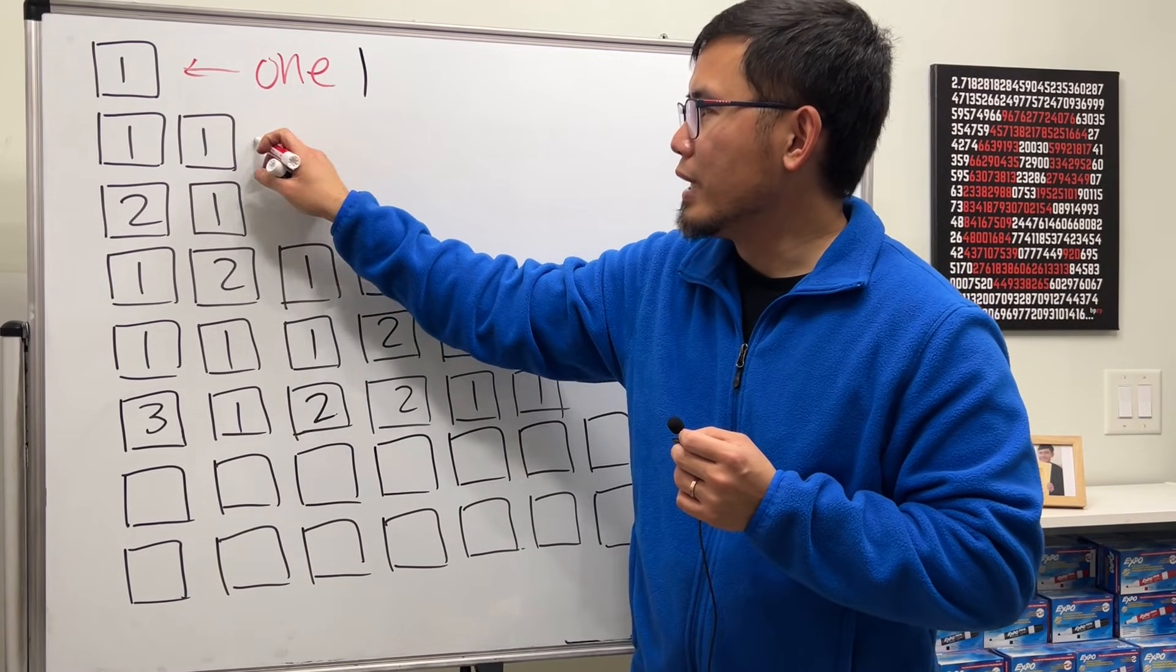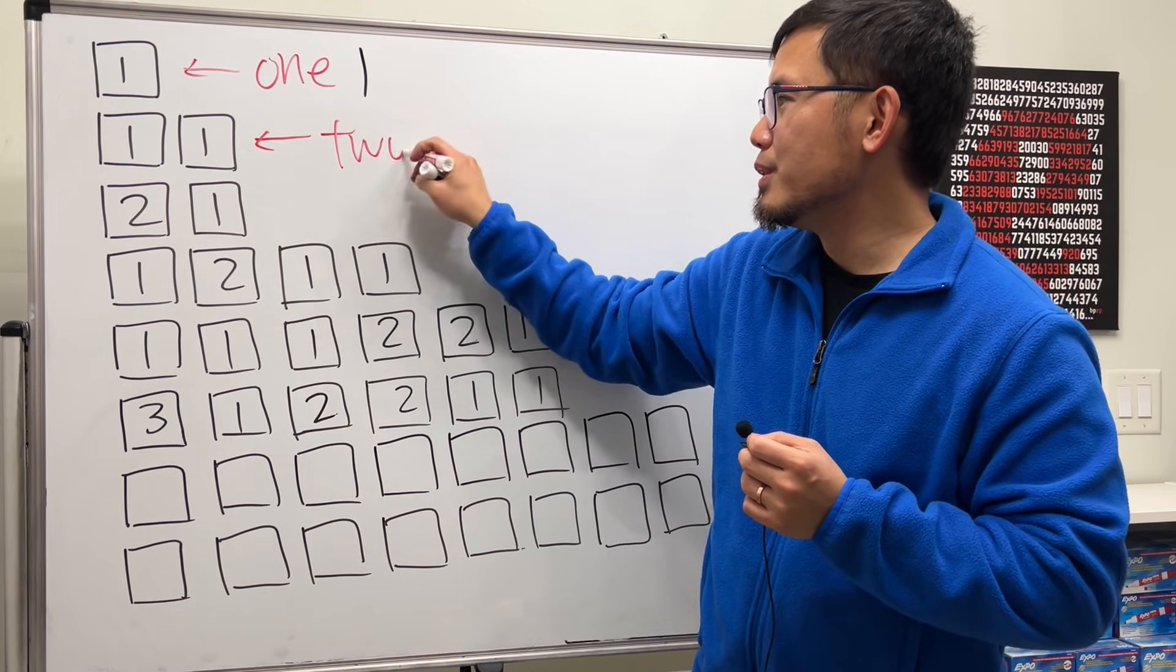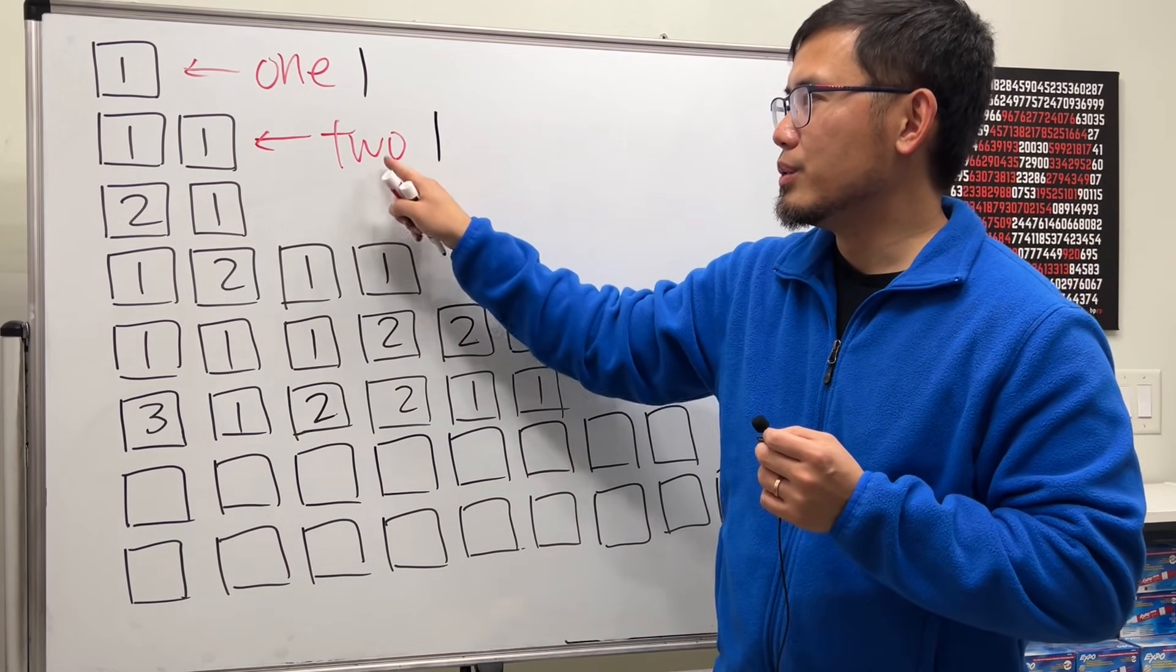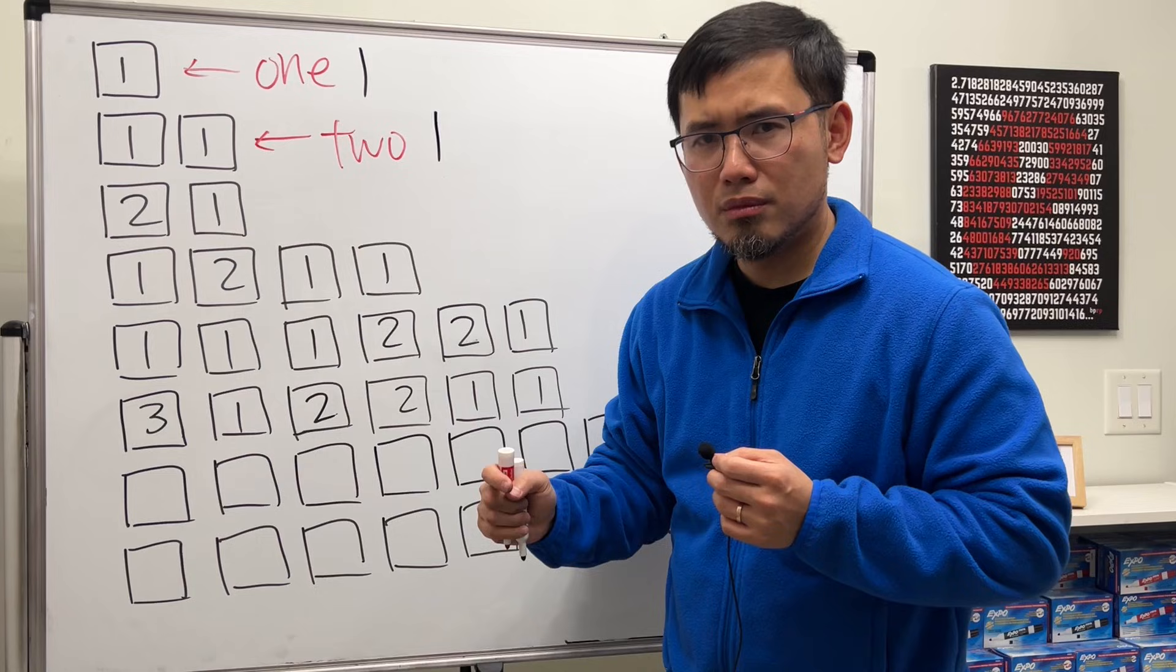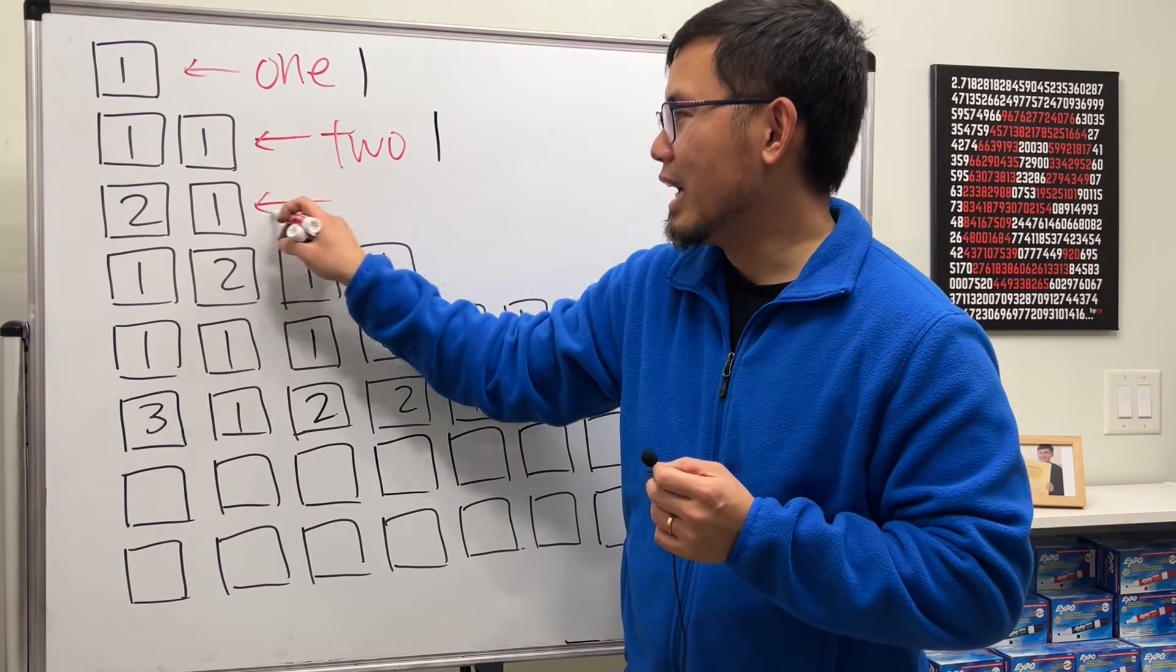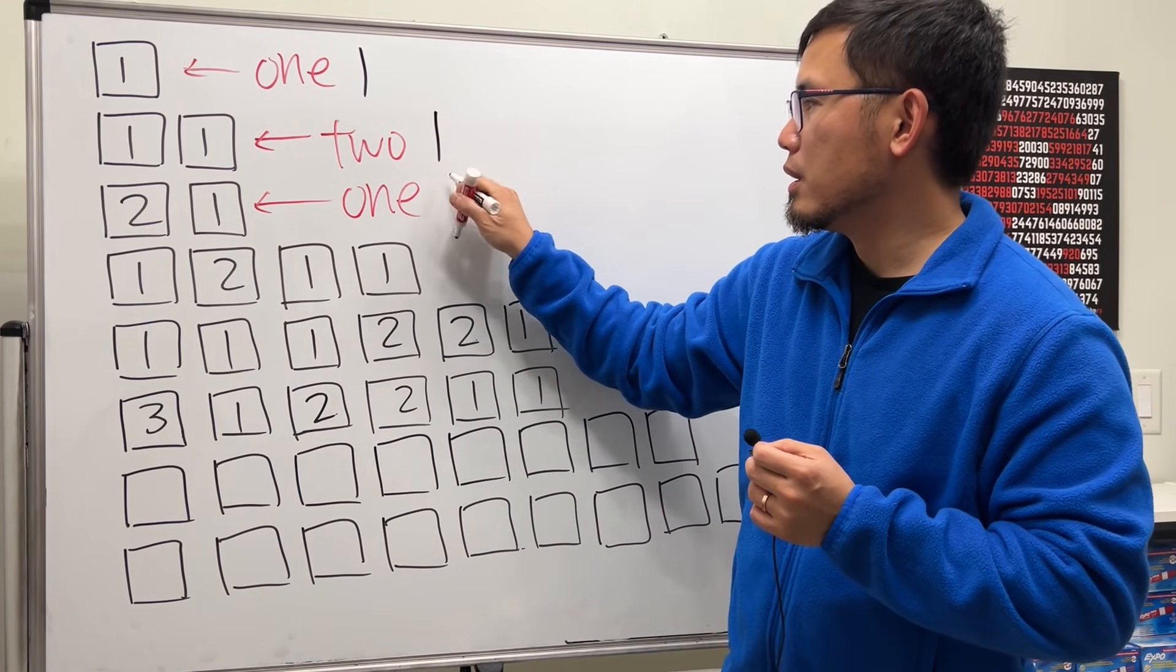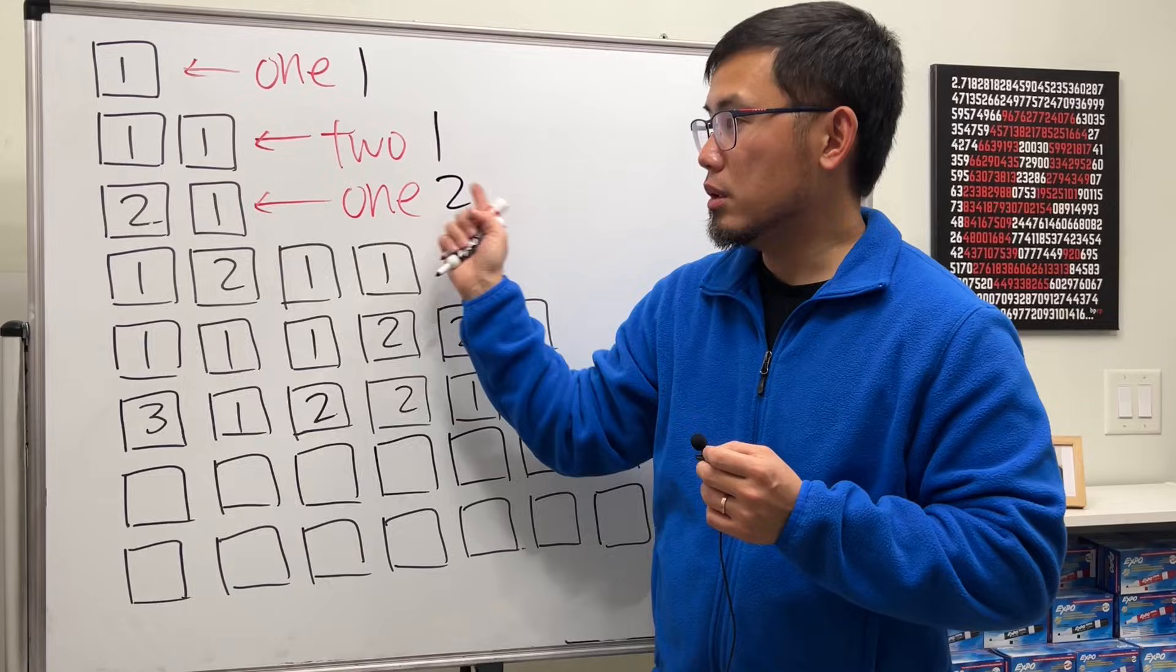For the second row, what do we have? We have two ones. Two ones, two one. You got it.